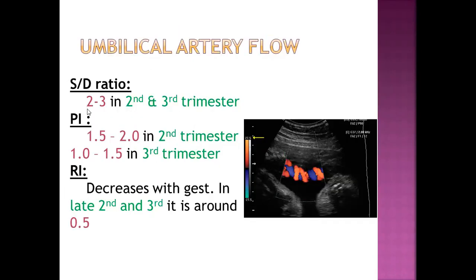What is the S/D ratio? Normally it is two to three in the second and third trimester. The S/D index is between 1.5 and 2 in the second trimester, but it decreases due to increased blood supply in the third trimester to less than 1.5. The S/D index is nearly around 0.5.